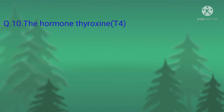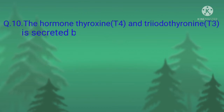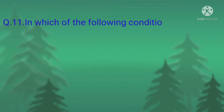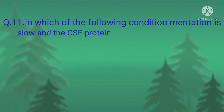Question number ten: the hormones thyroxine (T4) and triiodothyronine (T3) are secreted by — option A, pancreas; option B, thyroid gland; option C, thymus; option D, liver. The correct option is option B, thyroid gland.